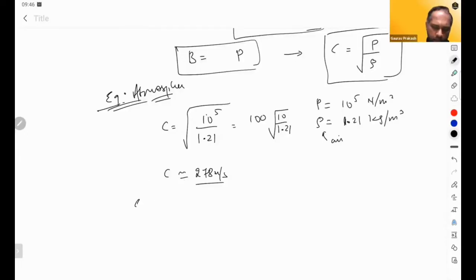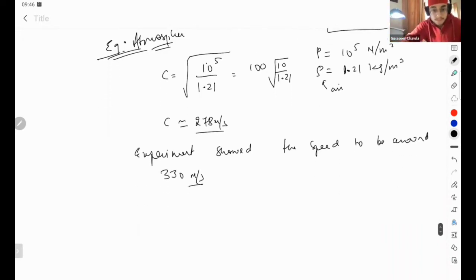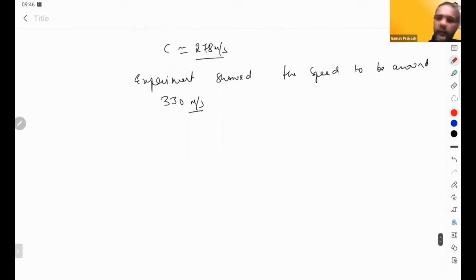The experiment was done and showed the speed to be around 330 meters per second. But Newton was wrong. So where did he go wrong? He went wrong while assuming the process to be isothermal.